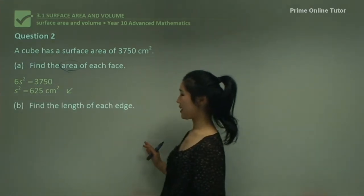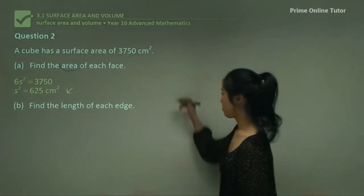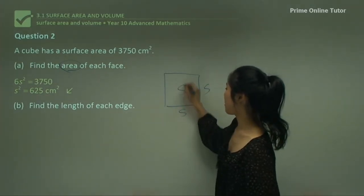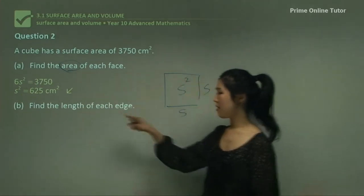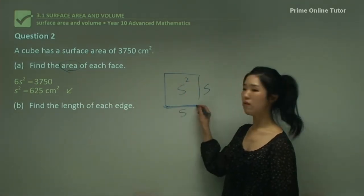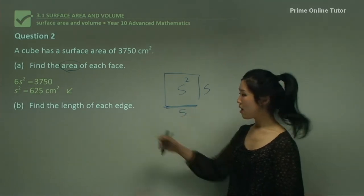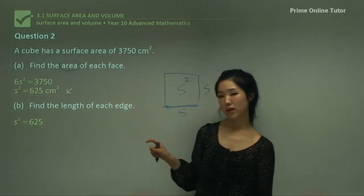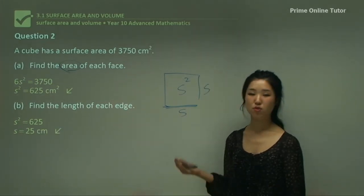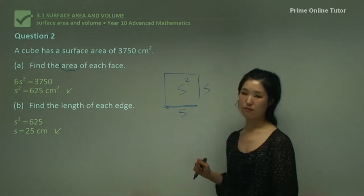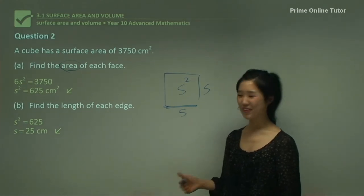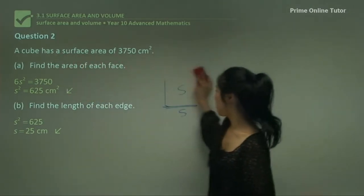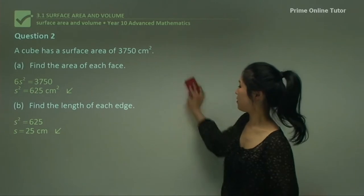Part B says find the length of each edge. The area is s squared, which we found to be 625 in part A. The length is just s, so we need to find s. Taking the square root of 625 gives us the length of each edge. The cube is pretty simple.